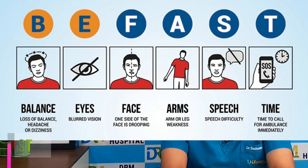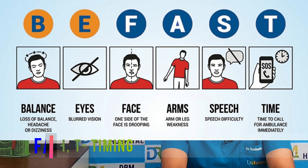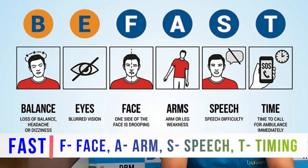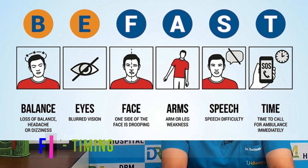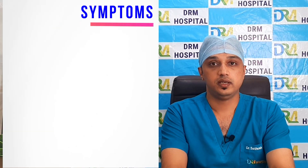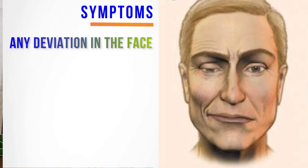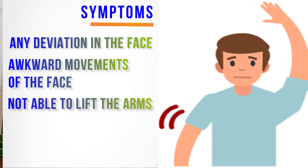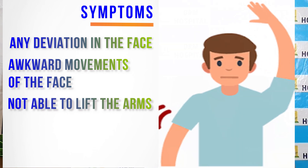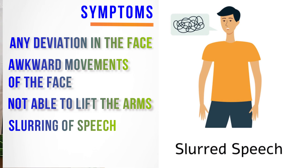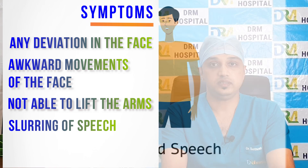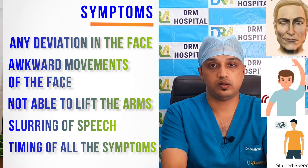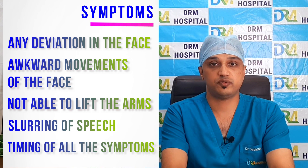For a layman, we call it as FAST. F stands for face, A stands for arm, S stands for speech, and T for timing. Basically, any deviation in the face or any awkward movements of the face, along with not being able to lift one or two of the arms on either side, and slurring of speech — the timing of all these symptoms is the mnemonic for FAST.